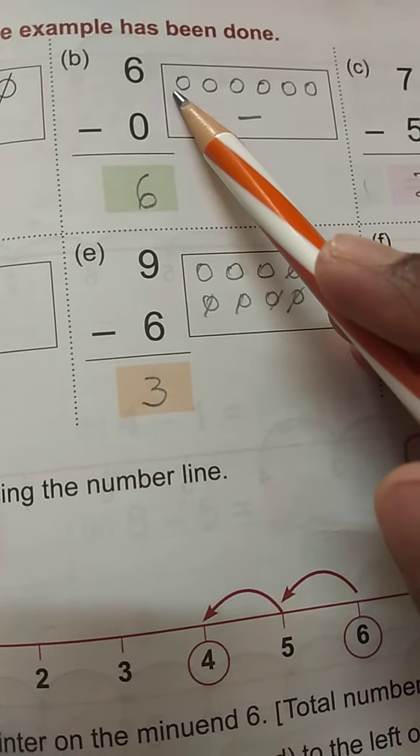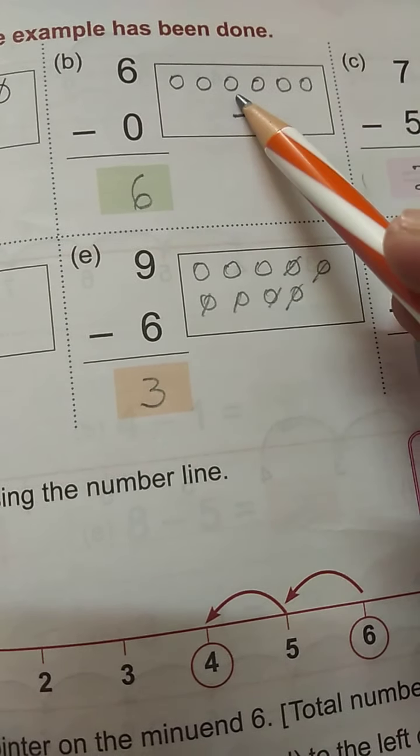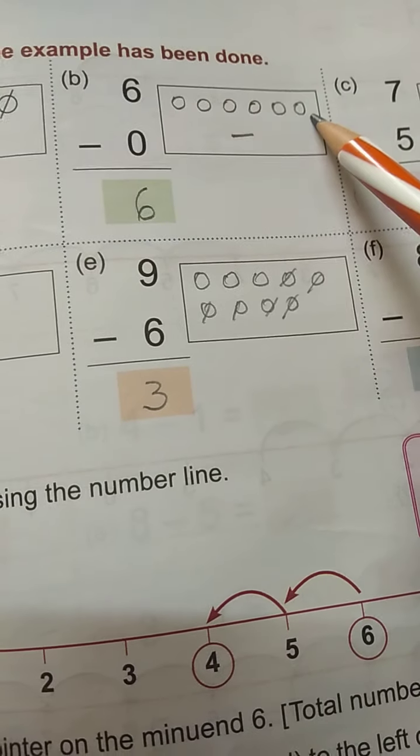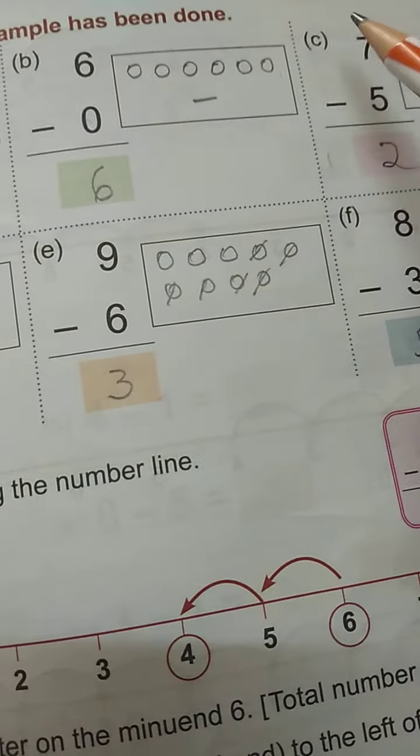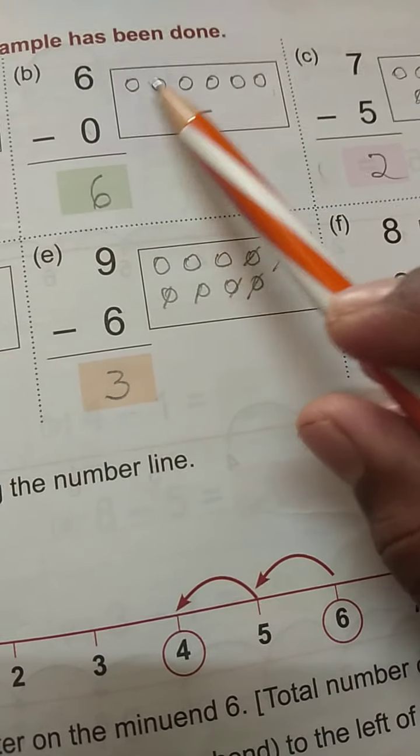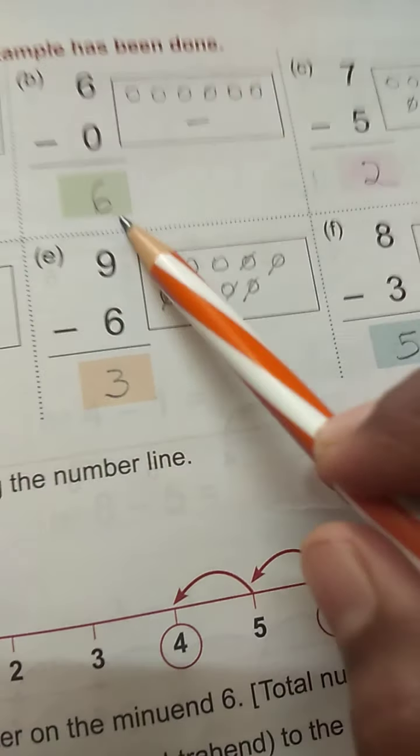So 6. 1, 2, 3, 4, 5, 6. Six dots. So 0. And 2 are better. So 2 will be 1, 2, 3, 4, 5. So 6 will be there.